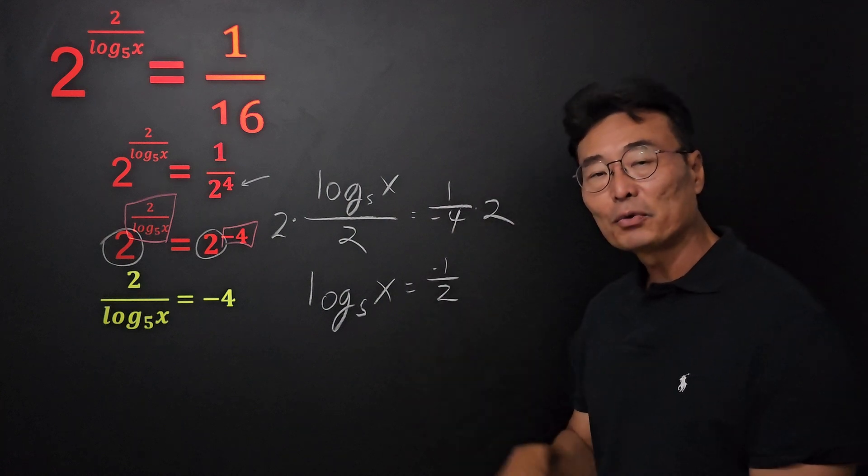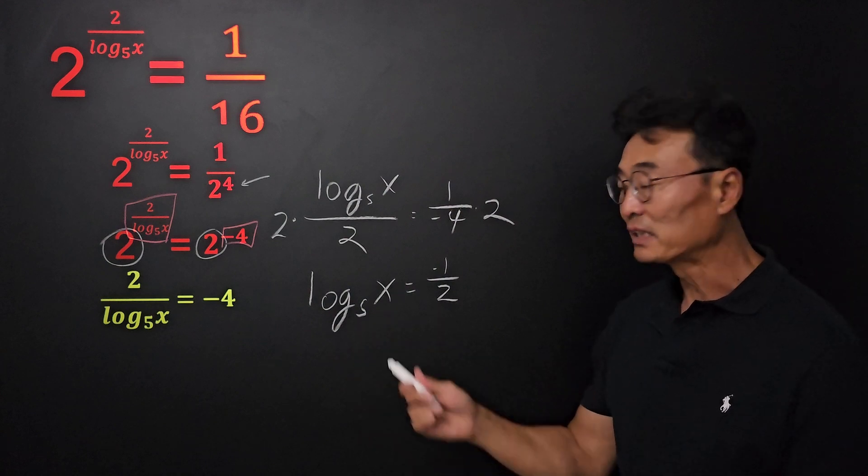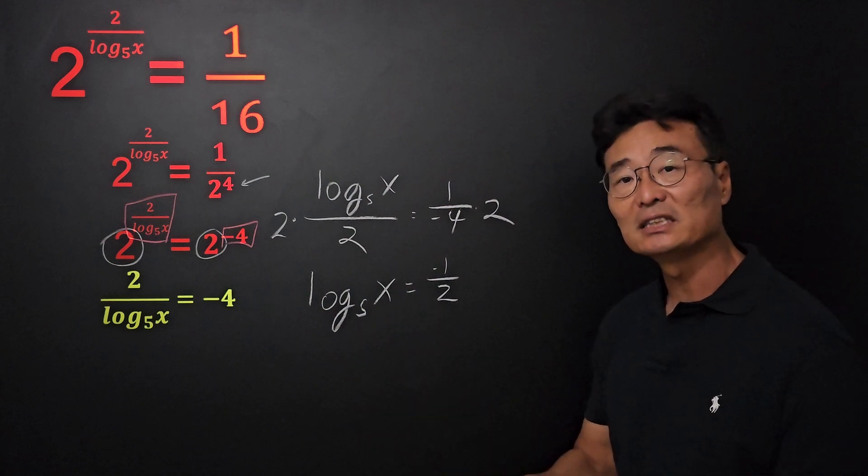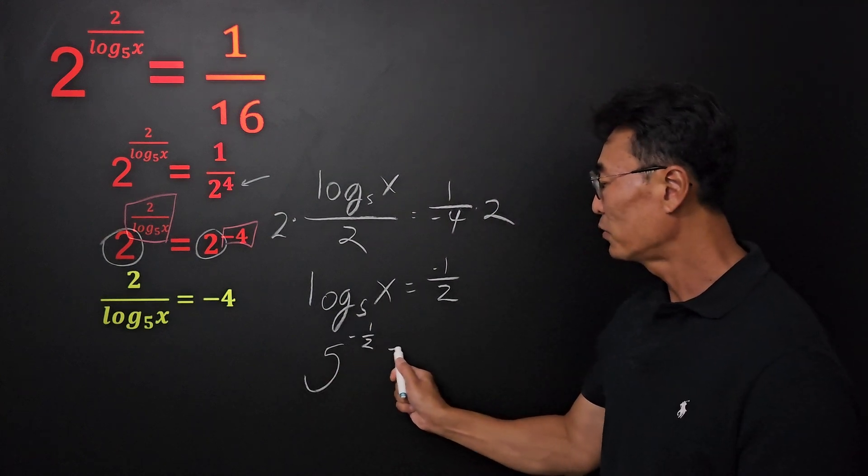Now we're almost done. I'm going to take this logarithmic equation and change it into an exponential equation. We need to take this into 5 to the negative half power equals x.